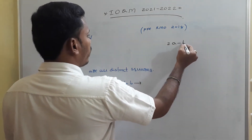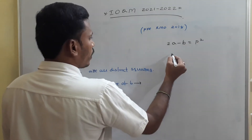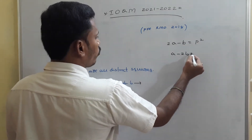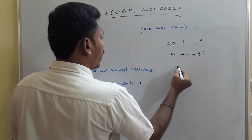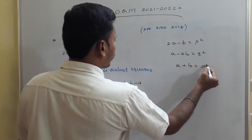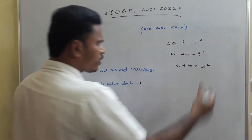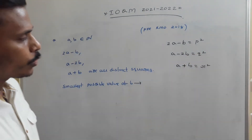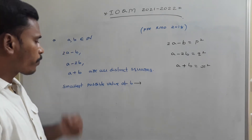Let 2a minus b equal to p squared, a minus 2b equal to q squared, and a plus b equal to r squared, since they are perfect squares.